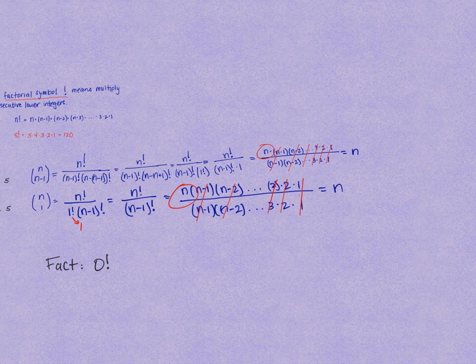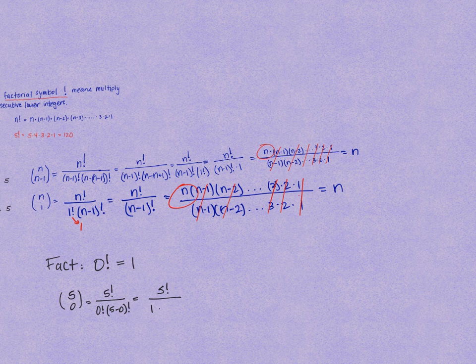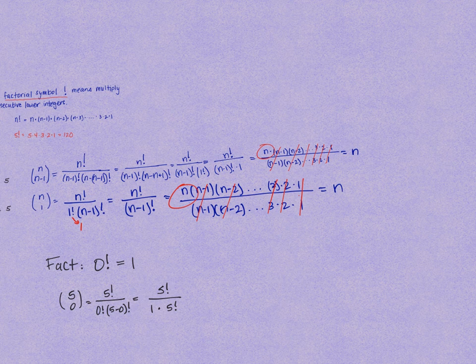One more fact: 0 factorial equals 1. Just go with it. So something like 5 choose 0 becomes 5 factorial over 1 times 5 factorial, and you can see that the 5 factorials are going to cancel each other out, and so we get 1.